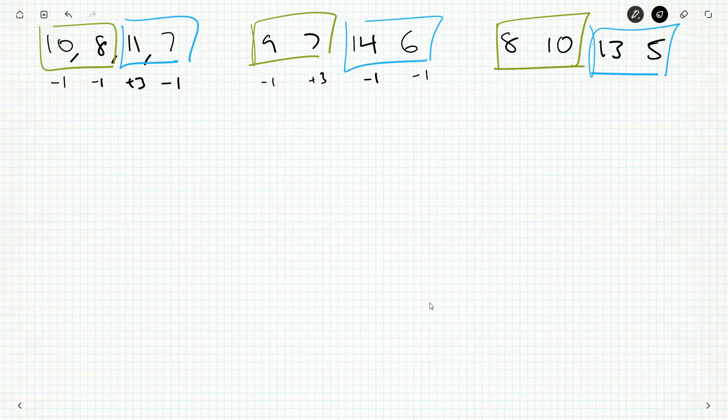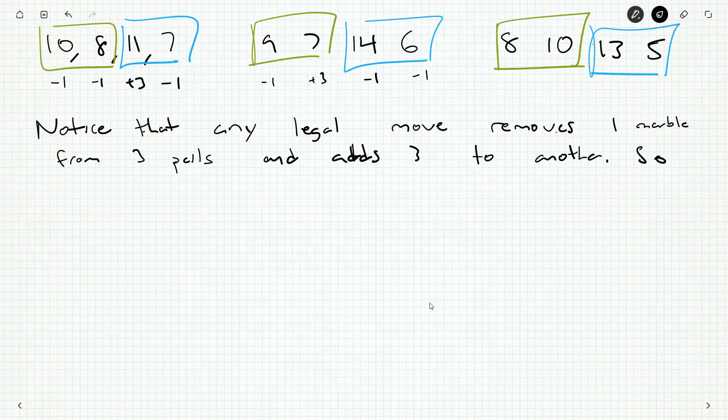Why is this happening? Well, our rules. Notice that any legal move removes one marble from three pails and adds three to another. So the number of marbles in each pail changes, and here's the key, changes by an odd amount each move. It doesn't matter what moves, but it changes by an odd amount each move.